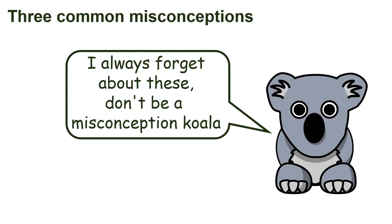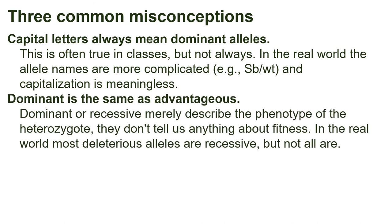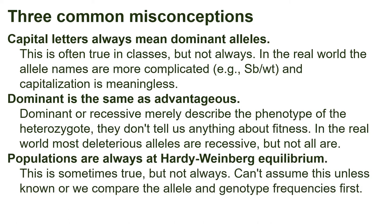Before some quick calculation examples, I'd like to mention three common misconceptions students have about Hardy-Weinberg equilibrium. First misconception: capital letters always mean dominant alleles. This is often true in classes, but not always — in the real world, allele names are more complicated and capitalization is meaningless. Second misconception: dominant is the same as advantageous. This is so common that I made a dedicated video. Briefly, dominant or recessive merely describe the phenotype of the heterozygote and don't tell us anything about fitness. Third misconception: populations are always at Hardy-Weinberg equilibrium. This is sometimes true but not always — we can't assume it unless already known or we compare the allele and genotype frequencies first.